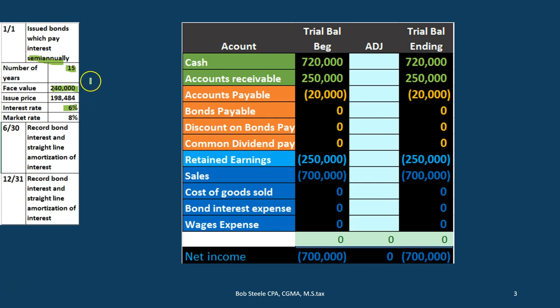As we make semi-annual interest payments, we're only paying what I call the rent on the money — similar to renting an apartment where you pay only for the use, not giving back part of the building each time. We're just paying back the interest until the end of the term, at which point we pay back the principal of $240,000.